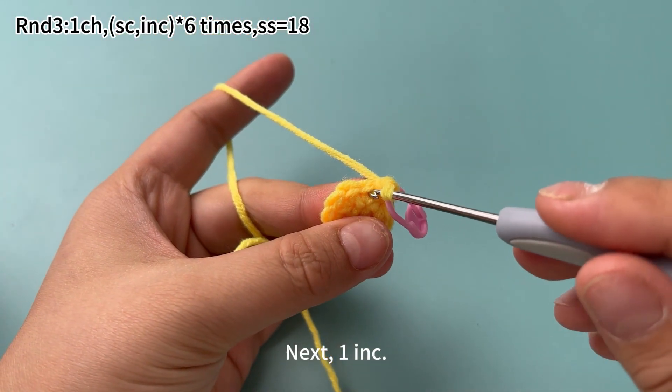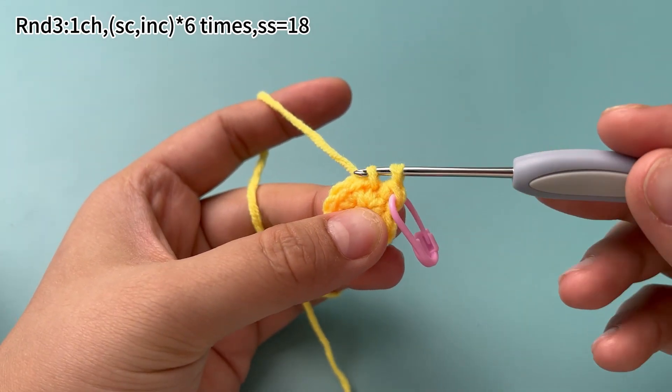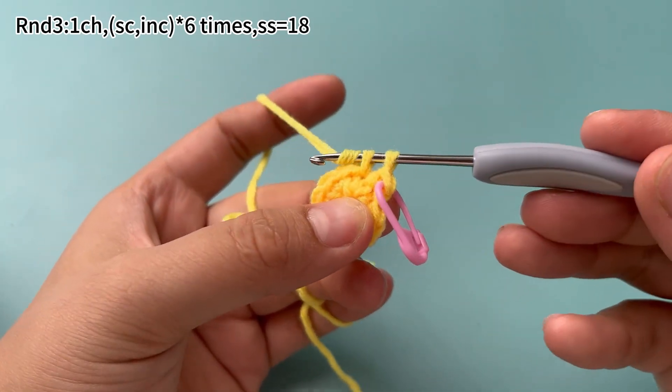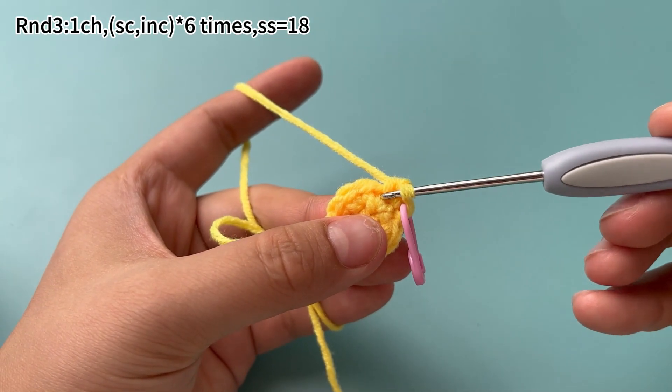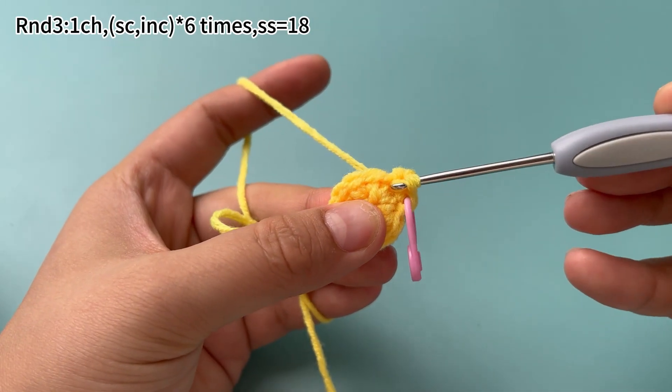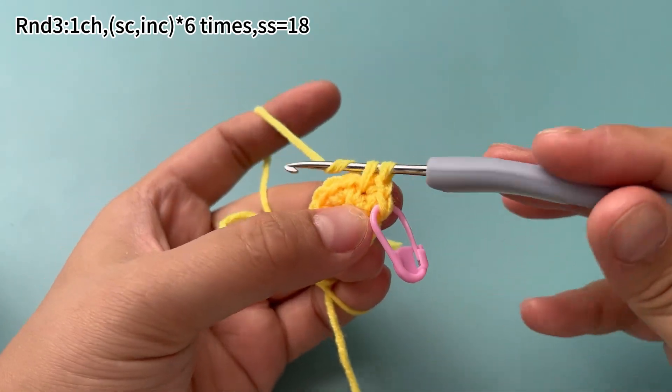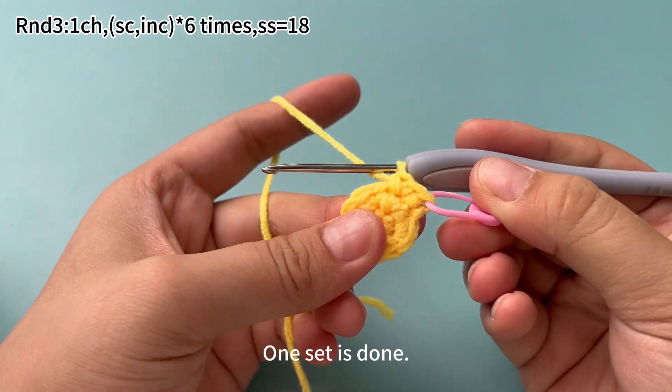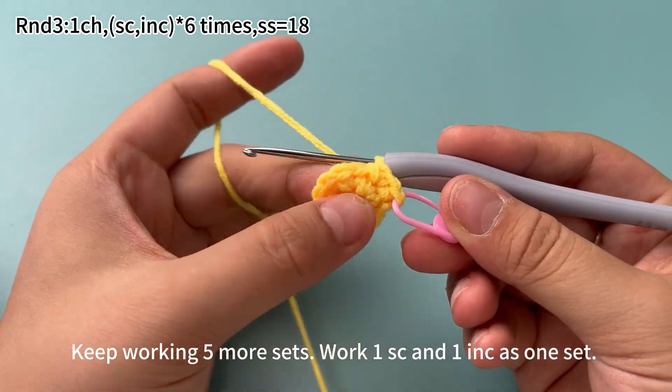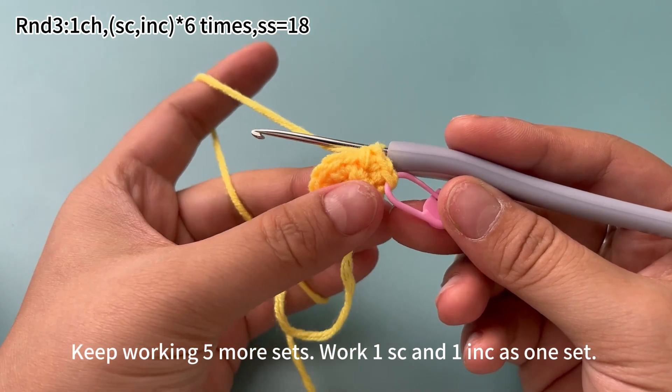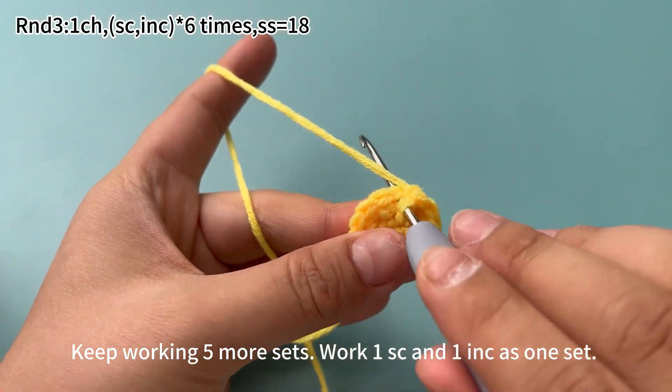Next, 1 increase. 1 set is done. Keep working 5 more sets. Work 1 single crochet and 1 increase as 1 set.